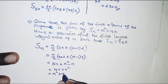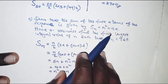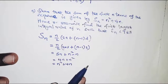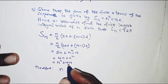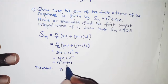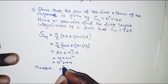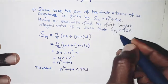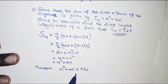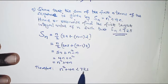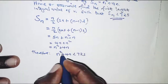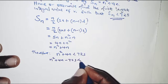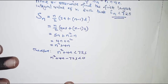We are now told: hence or otherwise, find the largest integral value of n such that the sum of the first n terms is less than 725. Since the sum of the first n terms equals n squared plus 4n, we set up the inequality: n squared plus 4n is less than 725, which rearranges to n squared plus 4n minus 725 is less than 0.